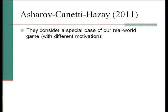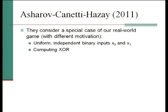The ACH paper I mentioned looks at essentially a special case of our real-world game. They're coming at it with a different motivation — trying to show a definition equivalent to the traditional fairness definition and then show an impossibility result. So they look at a limited setting: uniform independent binary inputs, and the function is essentially XOR or something isomorphic to it.